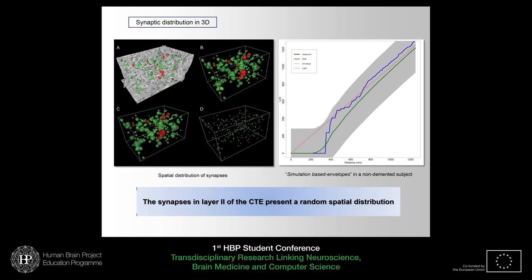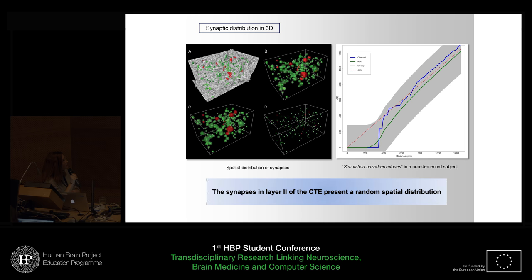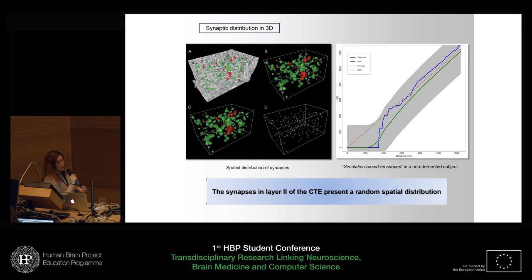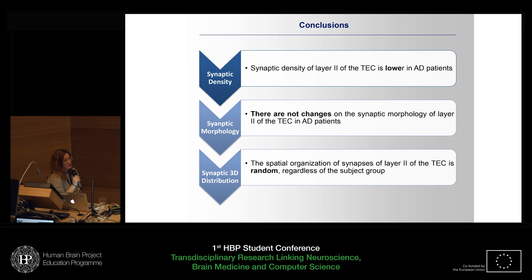Finally, to perform the spatial distribution analysis, we used different parameters about the size and spatial position of the synapses, and we performed a simulation-based envelope — meaning a simulation of a random pattern distribution — to evaluate whether our synapses fit this kind of distribution or not. We found that in both cases, the synapses present a random spatial distribution. So we can conclude that synaptic density is affected in Alzheimer's disease, being lower than in subjects with no neurological alteration; that there are no changes in synapse morphology in these patients; and that in both cases, synapses present a random spatial distribution.